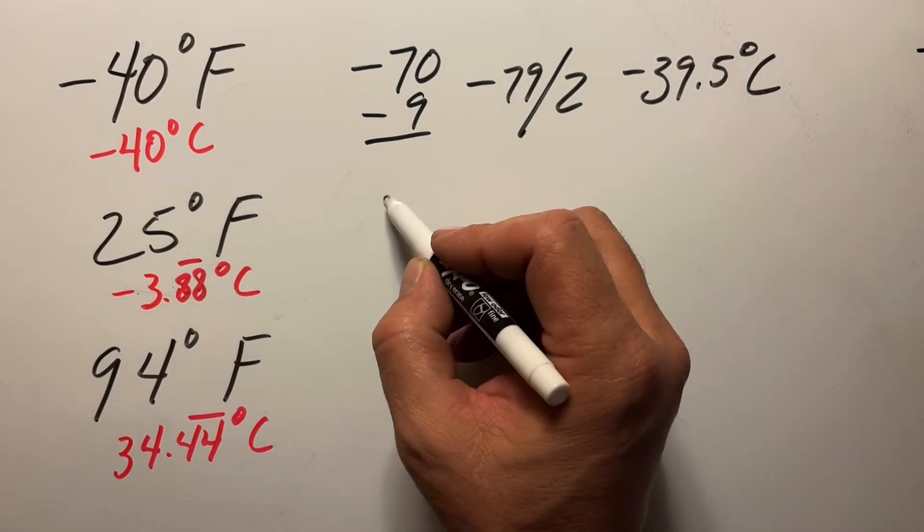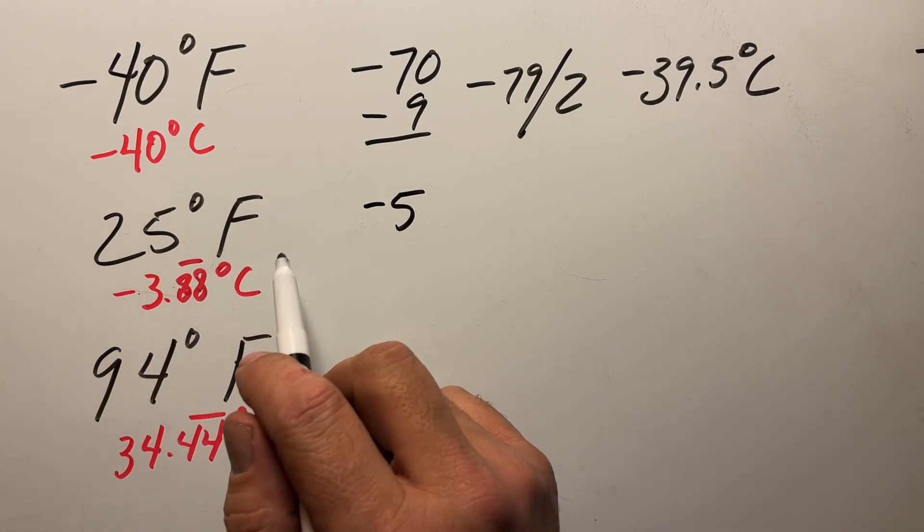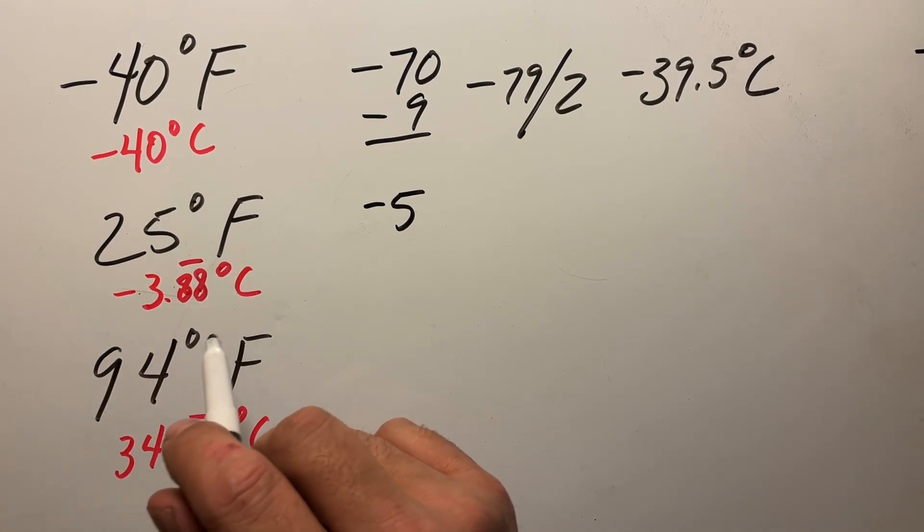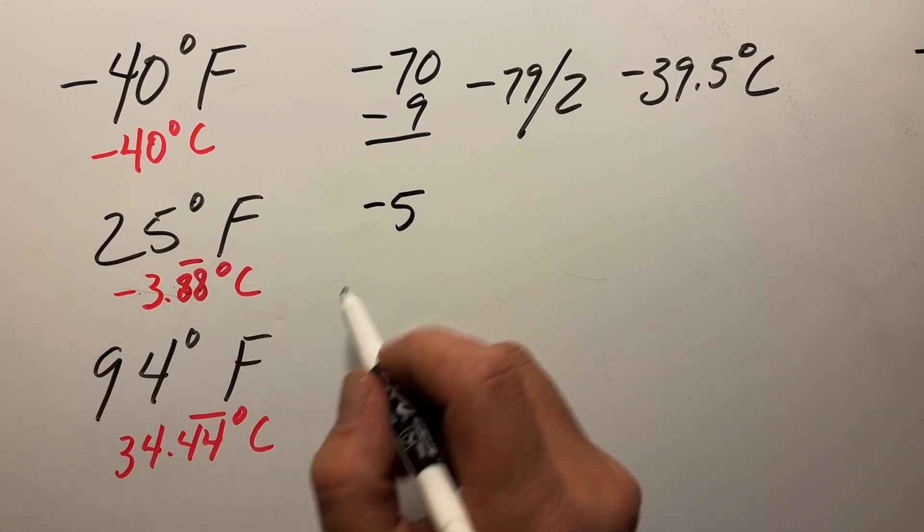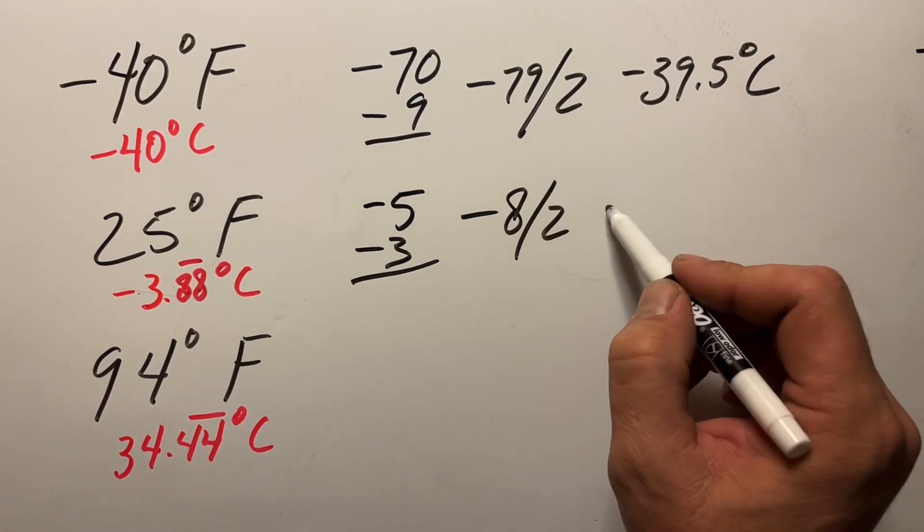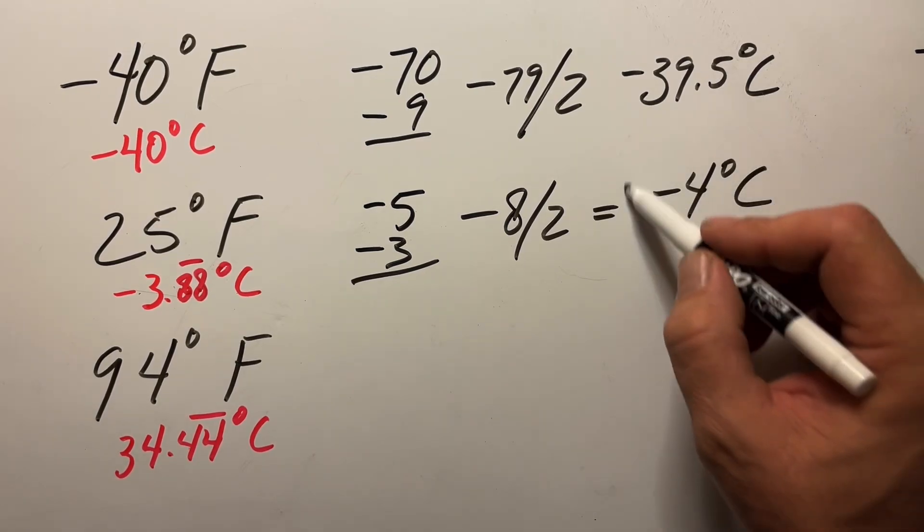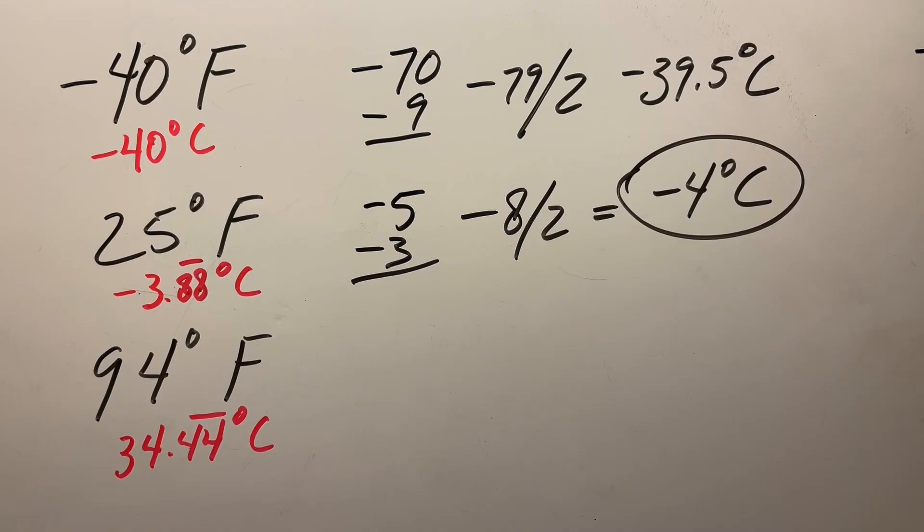25 degrees, we start off, it's going to be negative 5. The difference between 25 and 50 is negative 25. That becomes negative 2.5. We're going to round that down to negative 3. It becomes negative 8 divided by 2. And that becomes negative 4 degrees Celsius. We're off by 0.12 degrees.